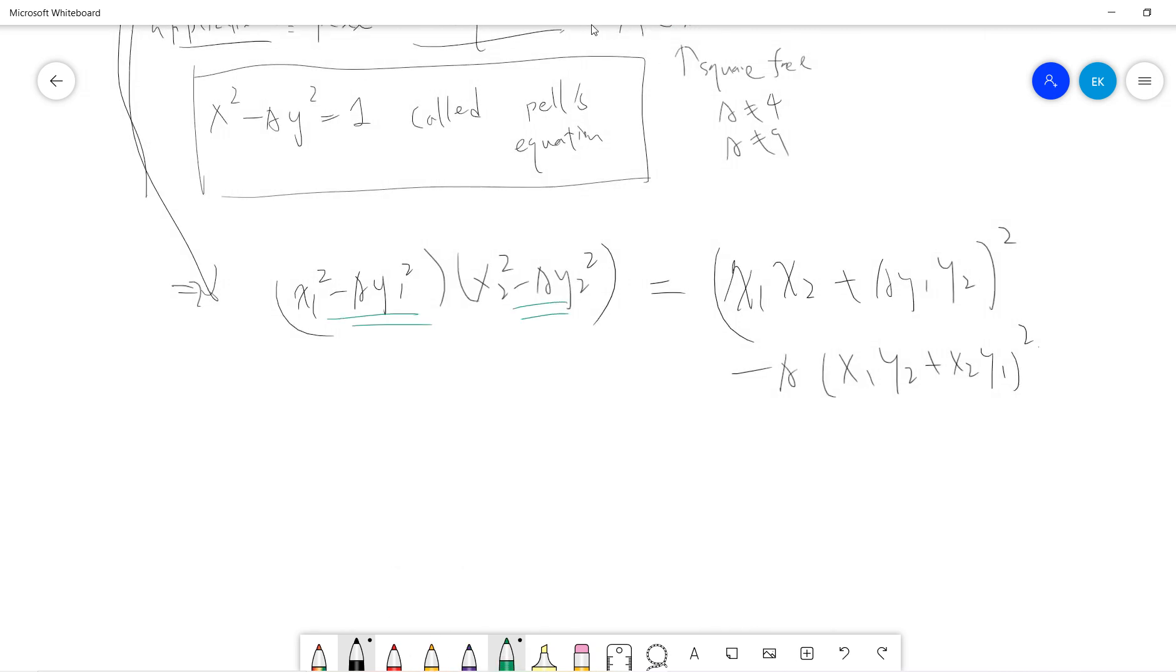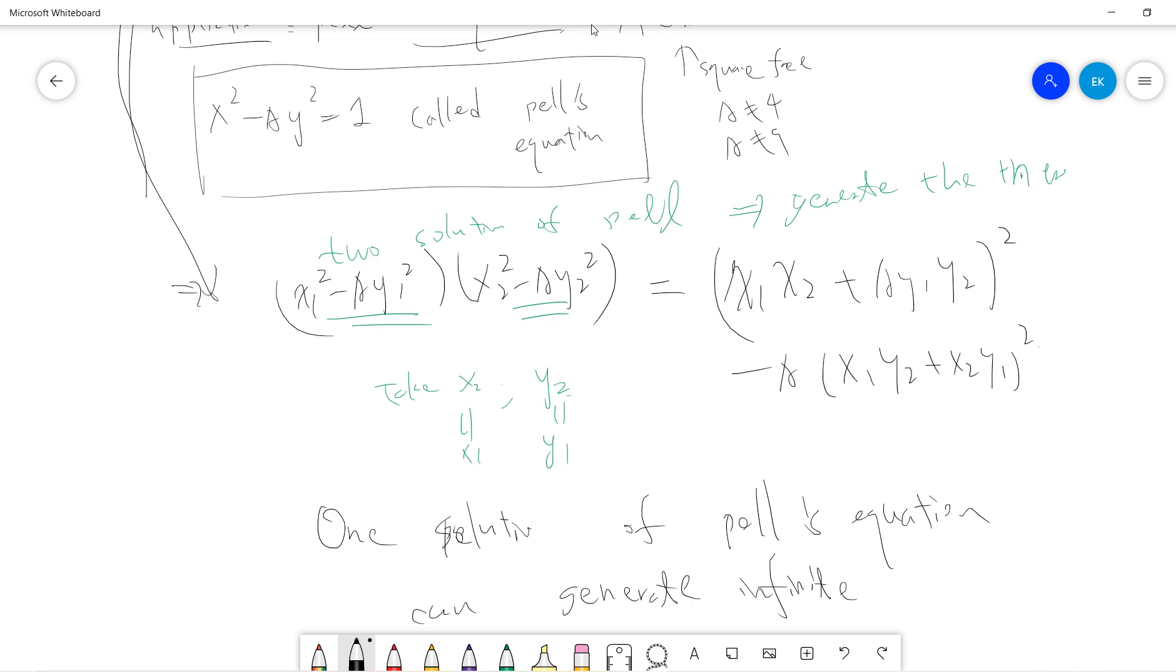More generally, if you take x2 and y2 to be the same as x1 and y1, then you can generate infinite solutions. It tells you that one solution of Pell's equation can generate infinitely many solutions - you can just take a square.